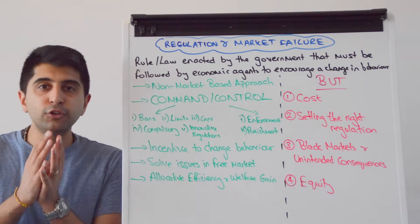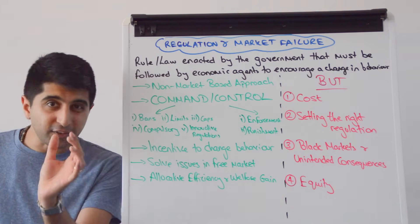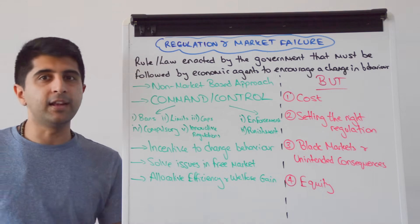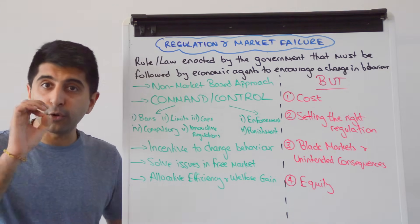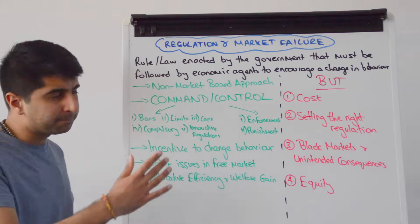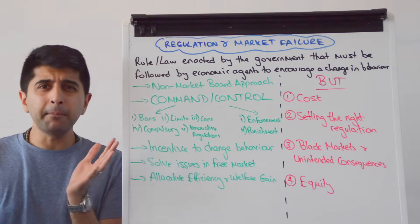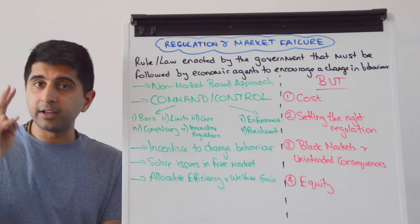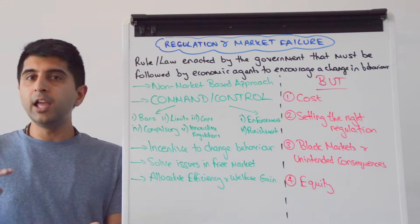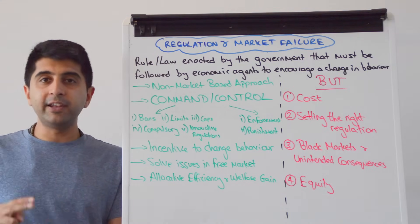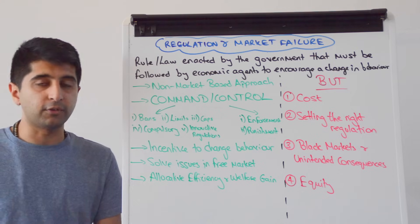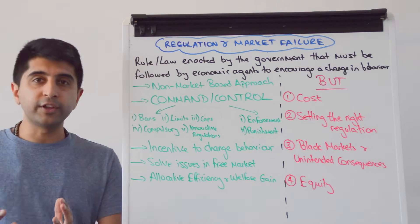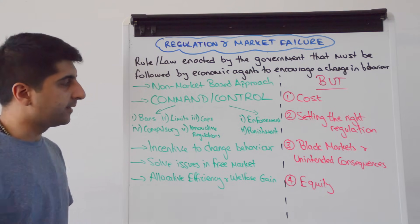It's a command and control approach — this is fundamental. Both elements are really significant if regulation is going to work in solving a market failure. Market failure can be anything: it could be a market failure where there is under consumption and under production, or it could be over consumption and over production. Regulations can work in solving all those kinds of market failures.